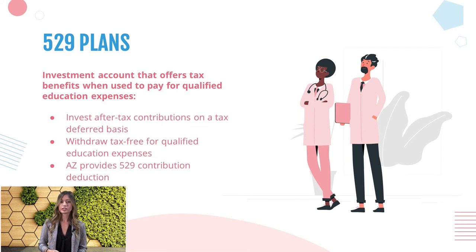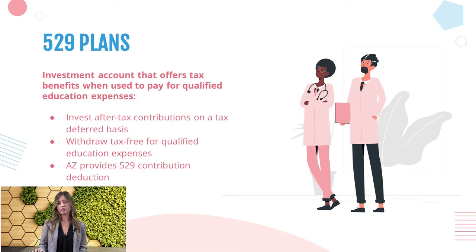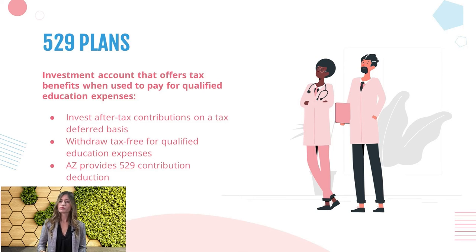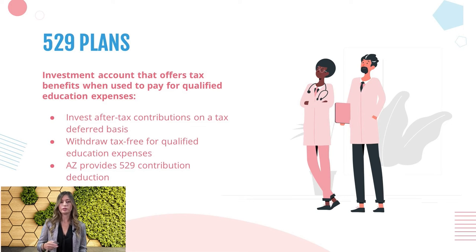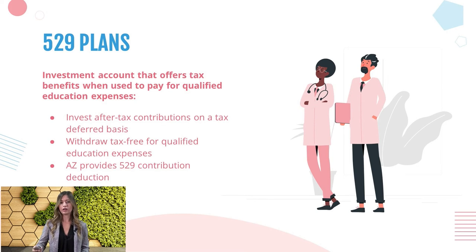529 plans are part of the tax code — investment accounts that offer tax benefits used to pay for qualified education expenses. Think of it like a Roth account: you deposit after-tax money into an investment account, it grows tax-deferred, and as long as you withdraw it for qualified education expenses, it's tax-free. In Arizona specifically, contributions to a beneficiary's 529 plan give you a $2,000 deduction on your state taxes per beneficiary — or up to $4,000 if married filing jointly.